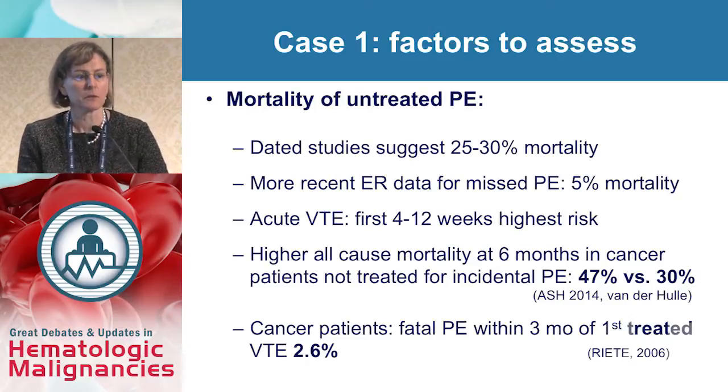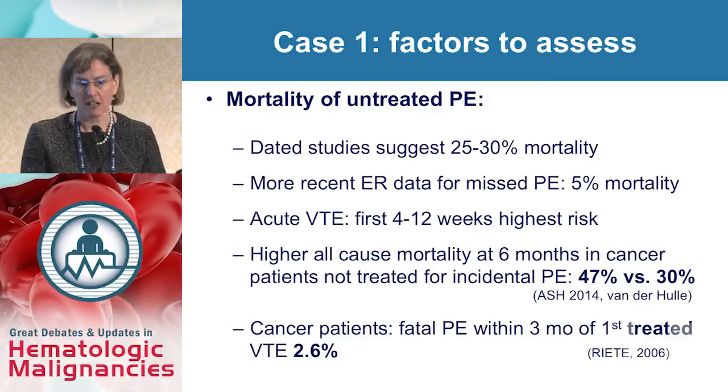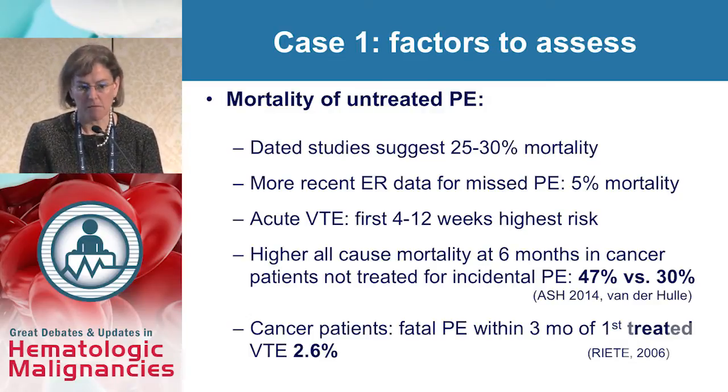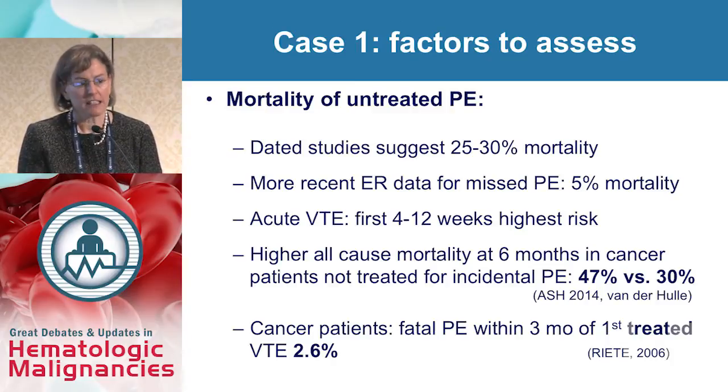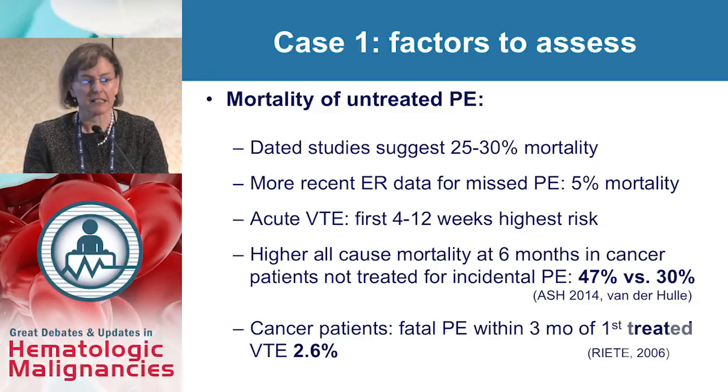When assessing this patient we need to look at the risks of anticoagulation versus the risks of not treating a pulmonary embolus. When we look at mortality of untreated pulmonary emboli, very dated studies suggest in the non-cancer patient population a 25 to 30% mortality. More recent data from emergency rooms suggests that for patients in whom a diagnosis of PE is missed, there's roughly a 5% mortality.